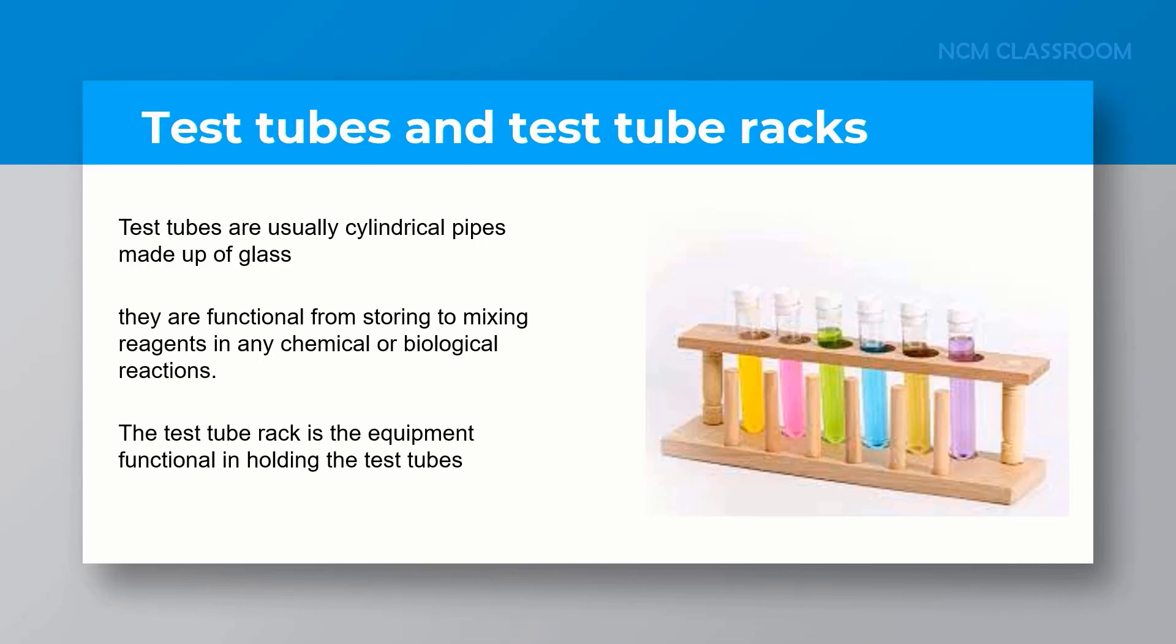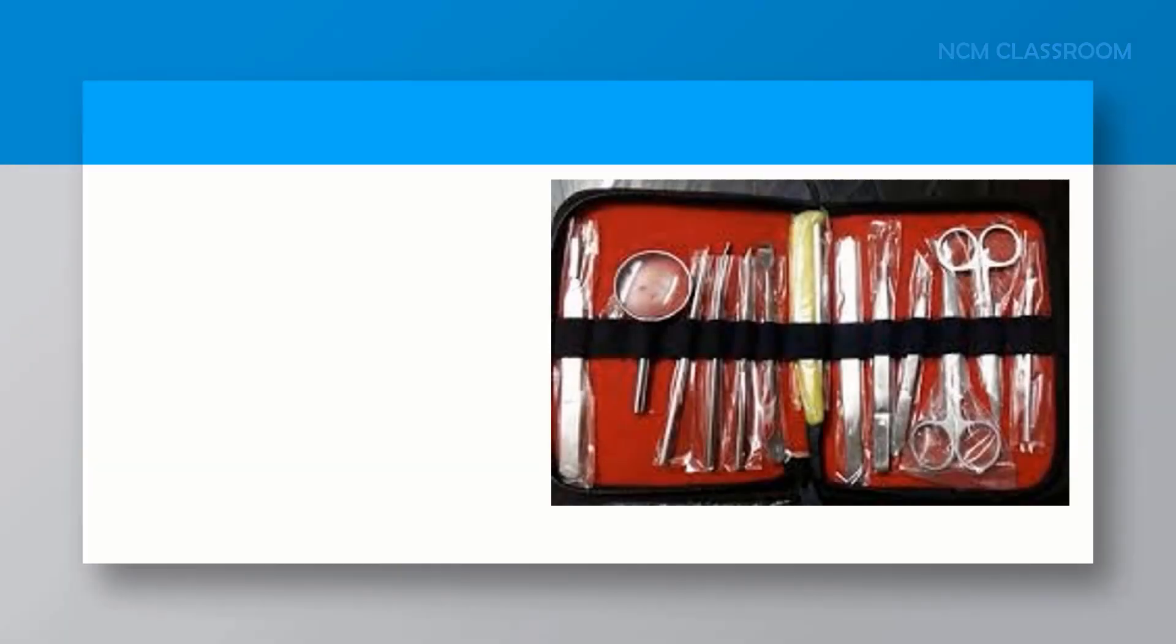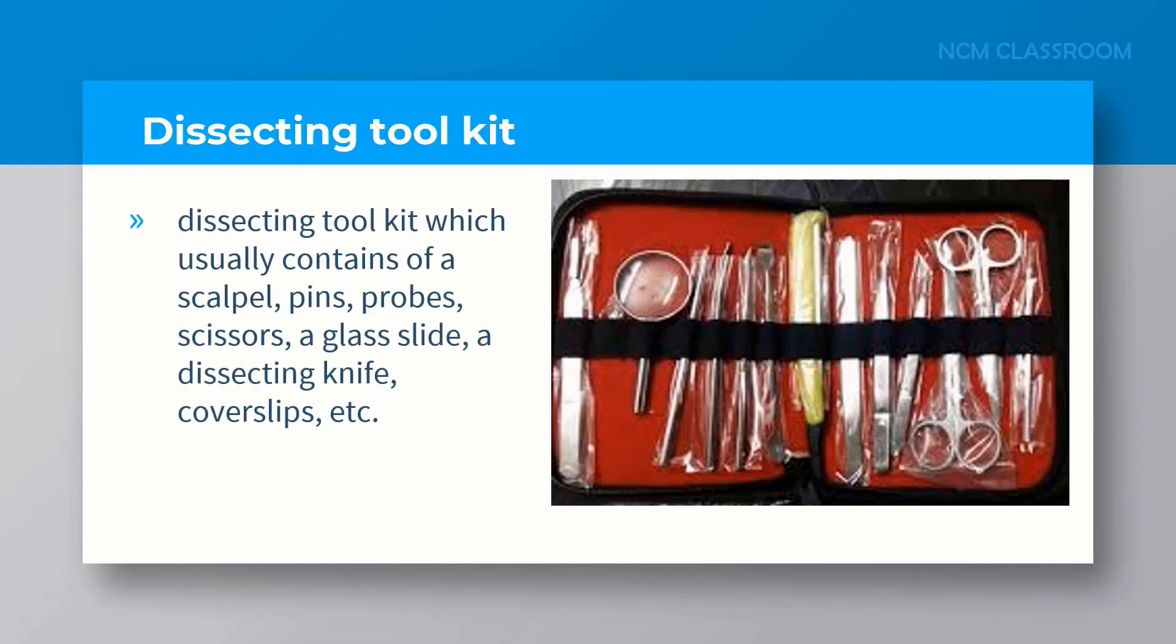The dissection toolkit usually contains a scalpel, pins, probes, scissors, a glass slide, a dissecting knife, cover slip, etc.